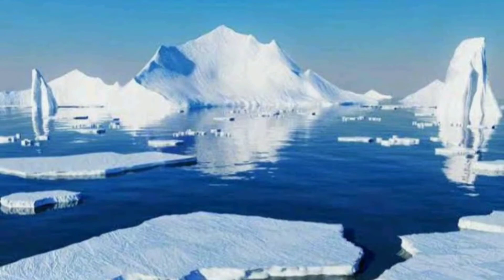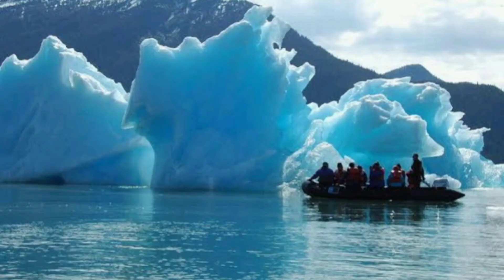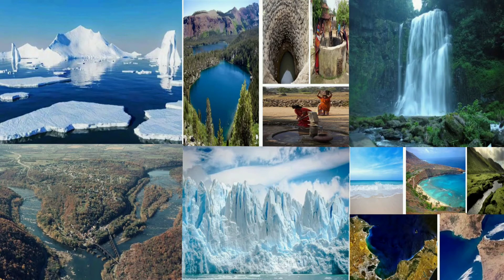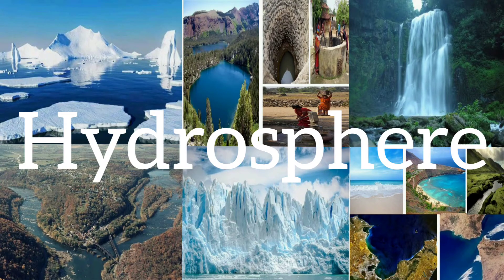There are also huge blocks of ice floating in the sea — they are called icebergs. So the water and ice on the earth's surface, groundwater, and water vapor all make up the earth's hydrosphere.